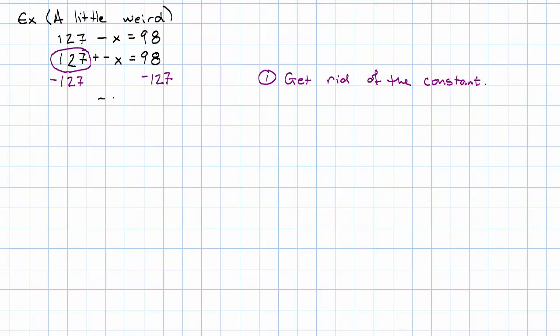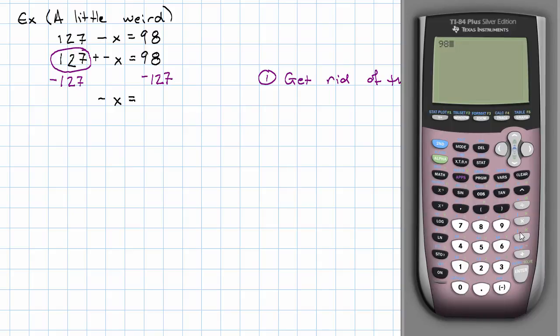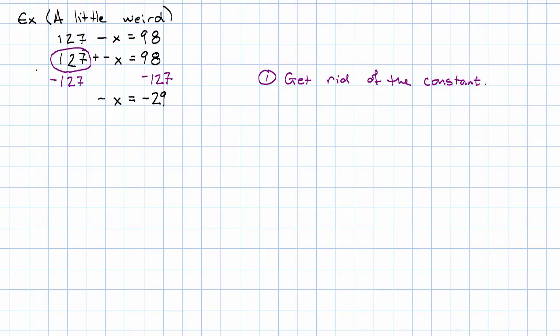On the left, we're just left with negative x. On the right, this looks like a job for my calculator. I have 98 minus 127 is negative 29. Now, I'm not quite done here, right? Remember, I understand this negative sign in front of the x as a coefficient negative 1. So I need to get rid of the negative 1. To do that, I'm going to multiply both sides by negative 1. And I'm left with, on the left, just x, and on the right, positive 29.